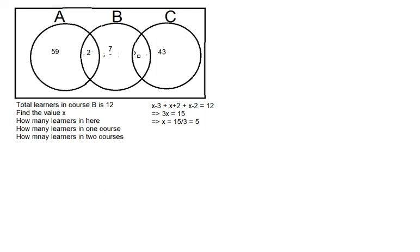x-2 = 5-2 = 3. We have all the numbers now, so we sum them together: 59 + 2 + 7 + 3 + 43 = 114 total learners.